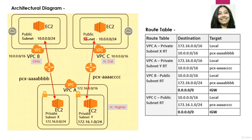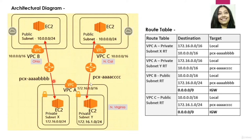Similarly, VPC C has one public subnet with CIDR block 10.0.0.0/24, also with an internet gateway. As part of our VPC peering tutorial, we will establish a peering connection between VPC A Private Subnet X and VPC B Public Subnet, and another peering connection between VPC A Private Subnet Y and VPC C Public Subnet. We'll name them PCX (for A-B) and PCX (for A-C).